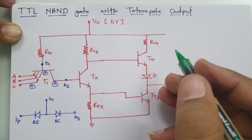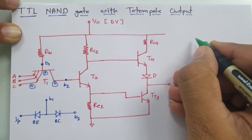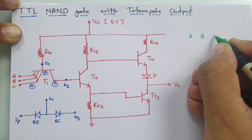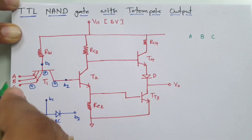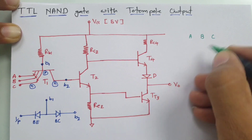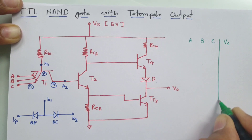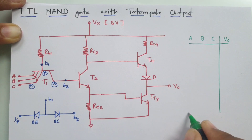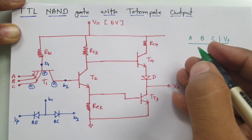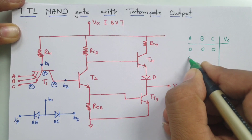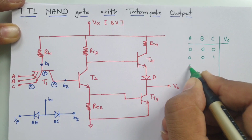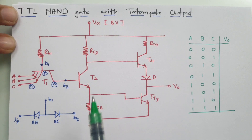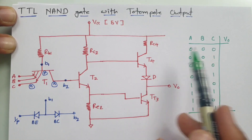For the NAND gate configuration, let us set up the truth table with inputs A, B, C and output V0. The inputs will go from 000 up to 111. Now let us see how this circuit functions with respect to these inputs.